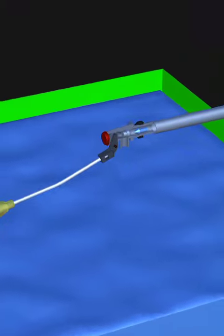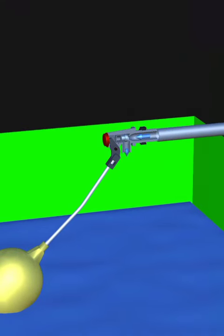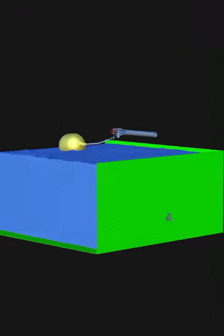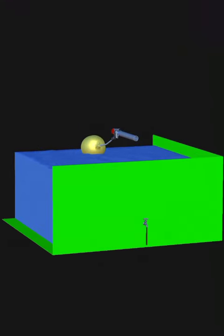The valve will remain open until the float device is raised to a predetermined level by the rising water. The valve will then be closed and the water supply shuts off.